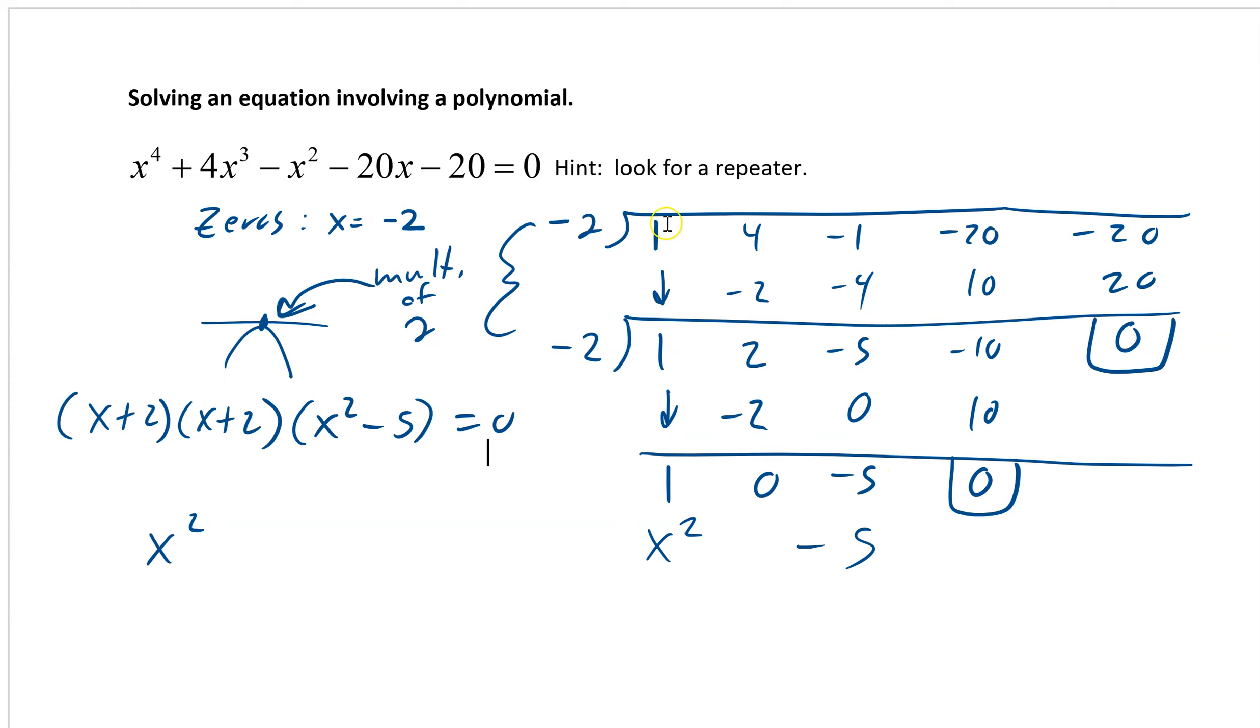Now what we have done is taken that x to the fourth and made it into an x plus two, and an x plus two, and then finally into an x squared minus five equals zero. We used the remainder theorem because if negative two gives us a zero, that means x plus two is a factor, and x plus two is a factor. We already know that x is equal to negative two and negative two. We just have to solve the last one. If we solve that, we get x equals plus or minus rad five.